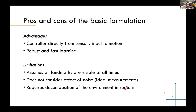The advantage of this approach is that we directly plan feedback controllers rather than nominal paths, eliminating the separate high-level planning and low-level controller distinction. Since we run Dijkstra/A* and then solve linear programs, it's very fast. However, the limitations are: it assumes all landmarks are visible at all times; it doesn't consider measurement noise; and finding a nice cell decomposition can itself be a hard task for complex environments.